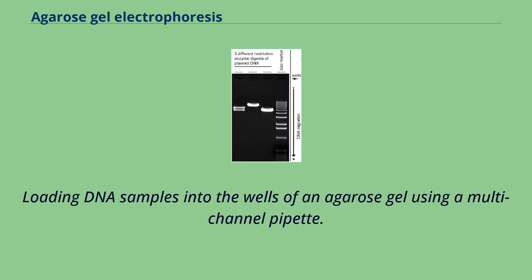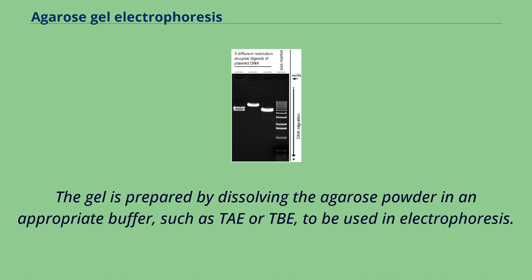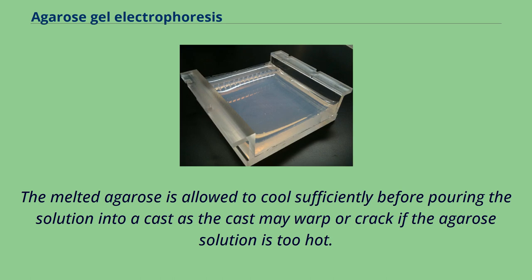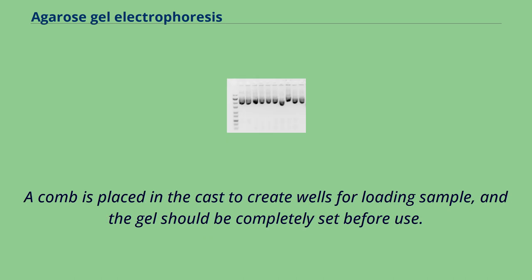The gel is prepared by dissolving agarose powder in an appropriate buffer such as TAE or TBE. The agarose is dispersed in the buffer before heating to near boiling point, avoiding boiling. The melted agarose is allowed to cool sufficiently before pouring into a cast, as the cast may warp or crack if too hot. A comb is placed in the cast to create wells for loading samples, and the gel should be completely set before use. The concentration of gel affects the resolution of DNA separation.